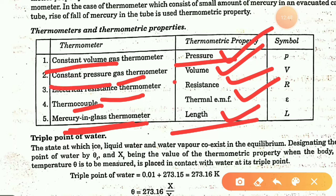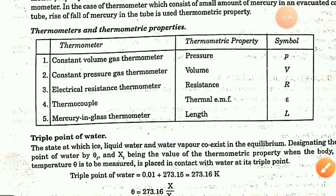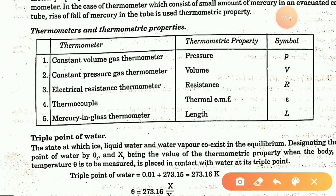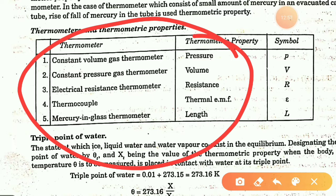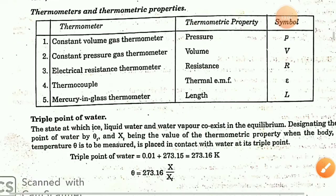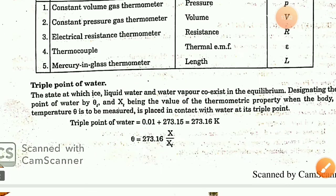Pressure is related to volume, and volume is related to pressure. If we write the triple point of water, the temperature at the triple point is where all three states — ice, water, and steam — exist simultaneously. At this point the degree of freedom is zero.